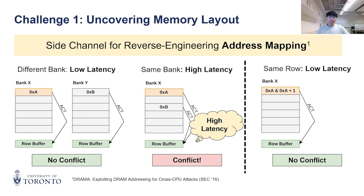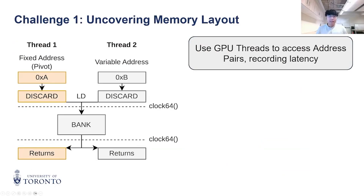Once we have all the addresses in the same bank, we can observe the absence of such conflict to know whether they are in the same row. Let us look at the methods to measure latency. We use GPU threads to access an address pair, 0xA and another address 0xB. We first clear the cache of both addresses before accessing their data.